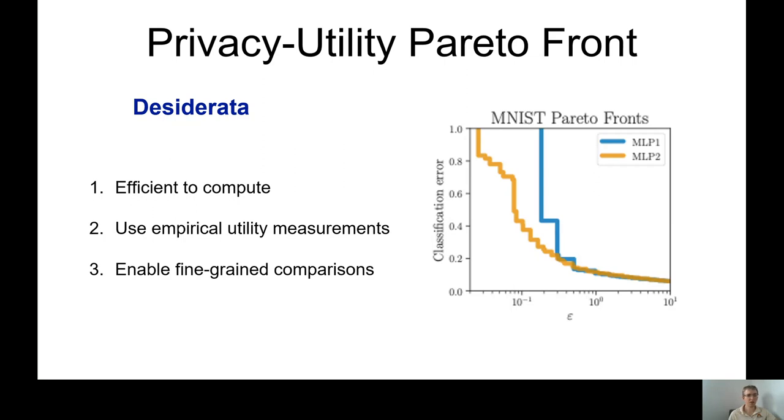So normally, this requirement rules out brute force approaches like a very fine grid on all possible combinations of hyperparameter values. So we also want to be able to use empirical measurements of utility, because in many cases we most likely don't have the exact bounds on it. And finally, with these plots, we would like to be able to do fine grain comparisons.